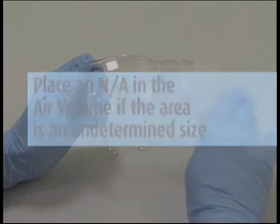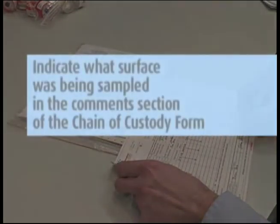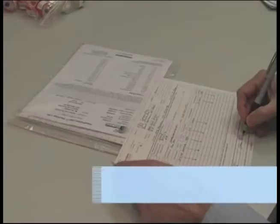Please indicate what surface was being sampled, such as table, floor, equipment, skin, etc., in the comments section of the chain of custody form. Remove the pink copy and keep this for your records.